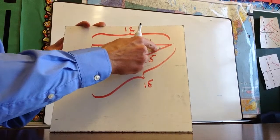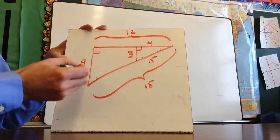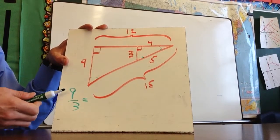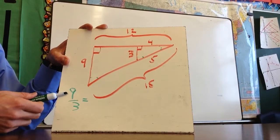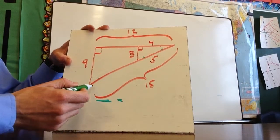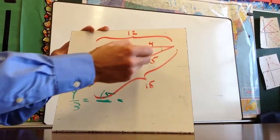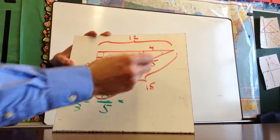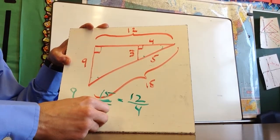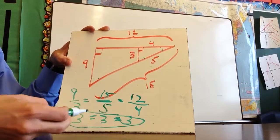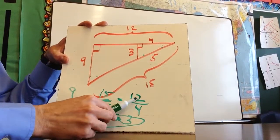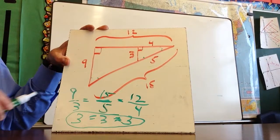Looking at the sides: the longer side compared to the corresponding side gives 9 over 3. I'm putting the large triangle on top — you could also write it as 3 over 9, just be consistent. The hypotenuse ratio is 15 over 5, and the leg ratio is 12 over 4. Each of these equals 3, so the ratios are equal. If any one — say the last side were 13 instead of 12 — they would not be similar. But in this example, the triangles are similar.